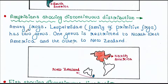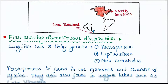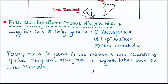Let's talk about some amphibians. Among frogs, Leiopelmatidae — the family of primitive frogs — has two genera. One genus is restricted to Northwest America and the other to New Zealand.